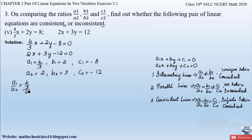Now let us find a1 by a2: it is (4/3) divided by 2. To solve this division, we reciprocate the denominator, giving us (4/3) multiplied by (1/2). Cancelling, we get 2 by 3. So a1 by a2 equals 2 by 3.